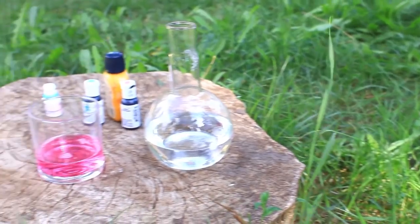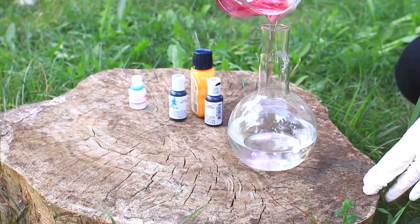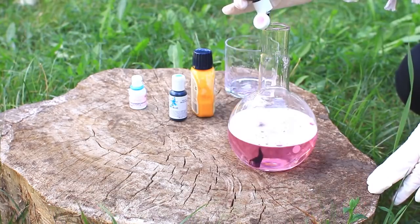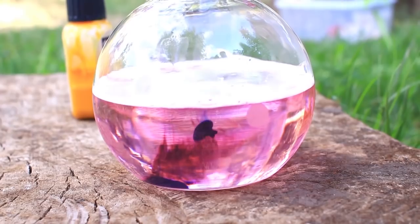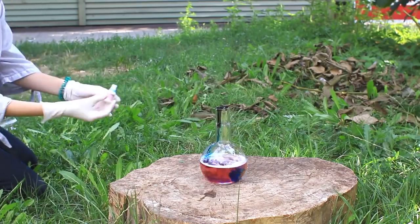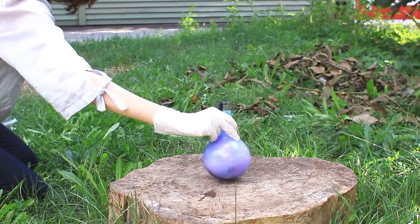Let's make another mixture. Pour the washing soap into the hydrogen peroxide again. Add a few drops of the coloring. And potassium iodide in the form of eye drops. Shake well!